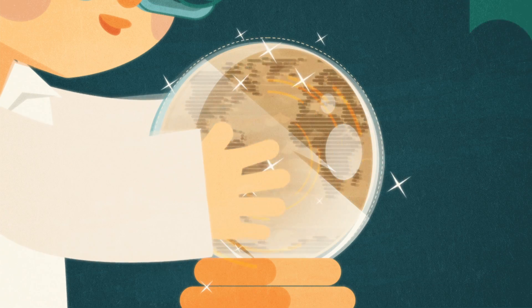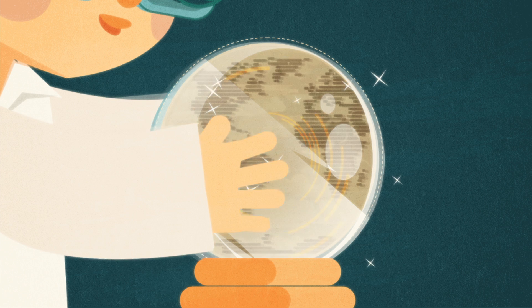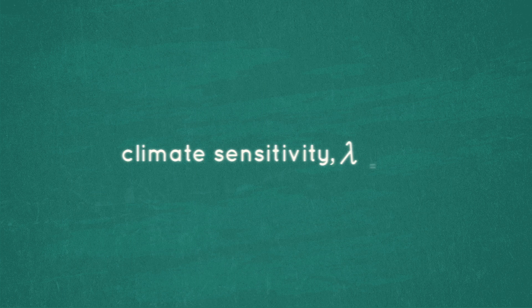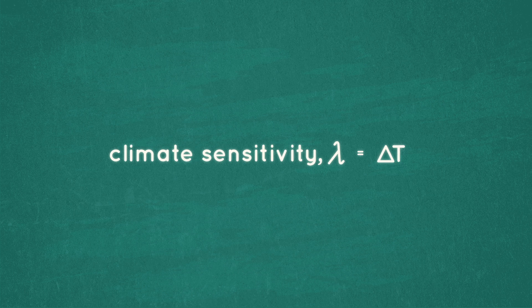In order to predict how the temperature will change, scientists need to know something called Earth's climate sensitivity, the temperature change in response to a radiative forcing.